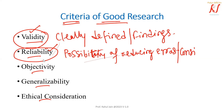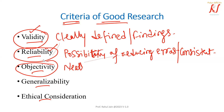The next criteria is objectivity. Research should be conducted in a neutral and unbiased environment. It should not manipulate the results with the researcher's personal belief, personal idea, or personal opinion. So it should be unbiased.